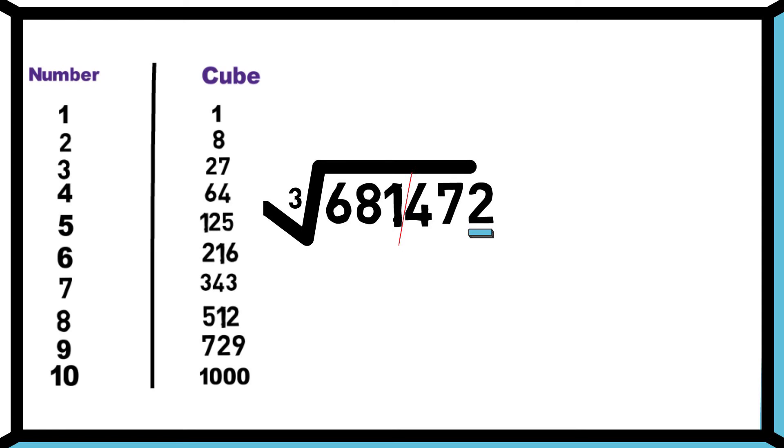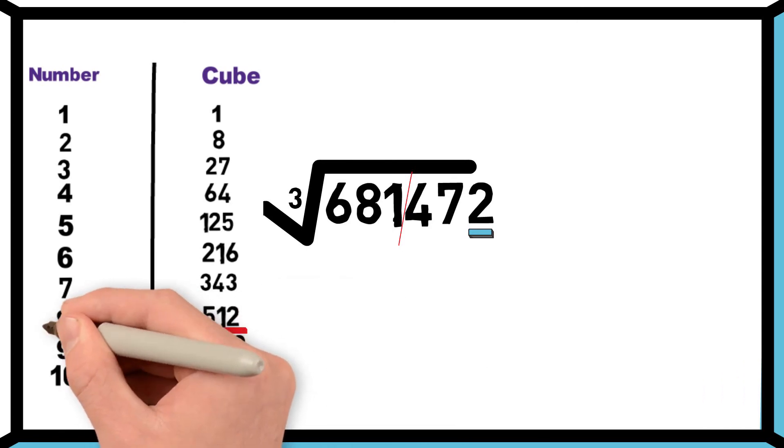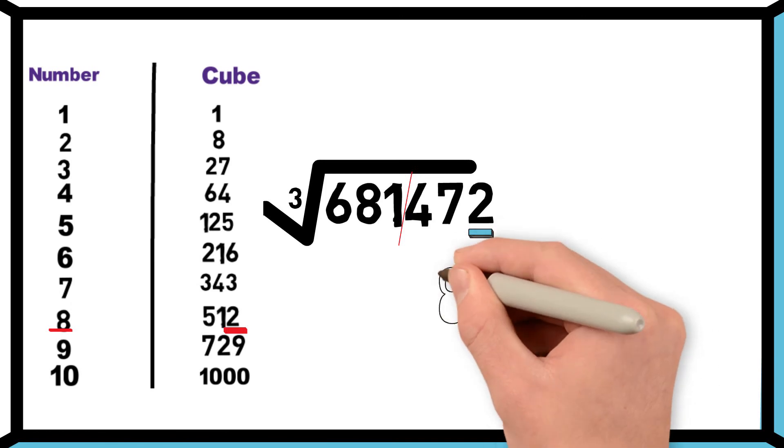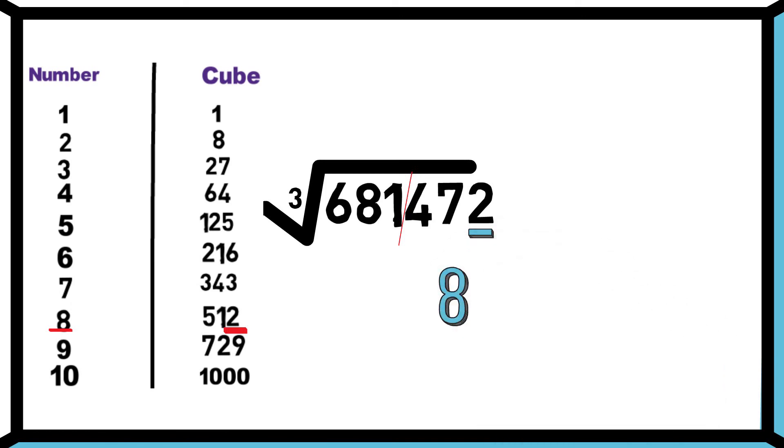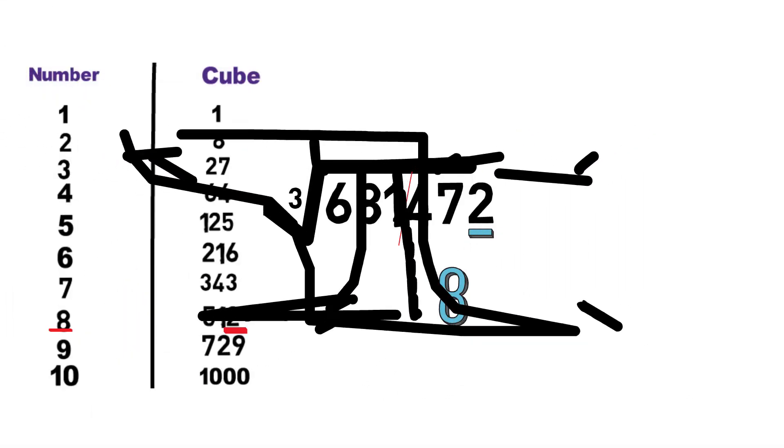If the last digit of the question is 2, then the last digit of its cube root will be 8. So we got the last digit of our answer, which is 8.